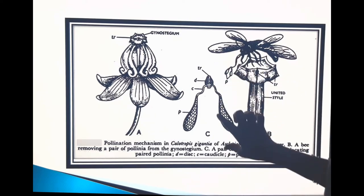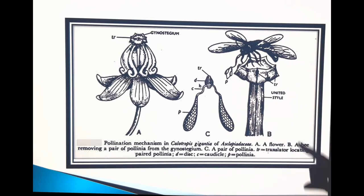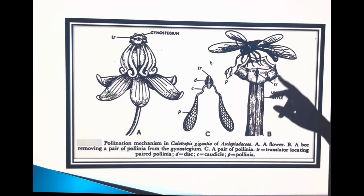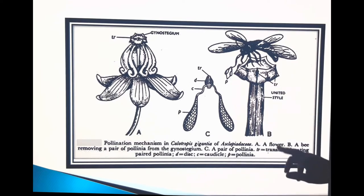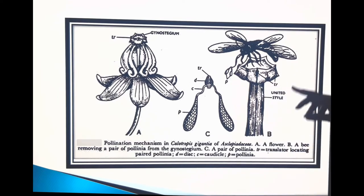This entire translator structure appears Y-shaped. See this diagram — this is the pollination mechanism, also known as the clip mechanism in the Sinonkaidee.